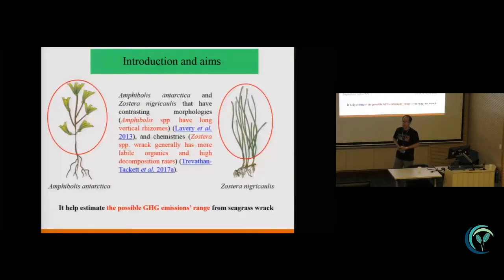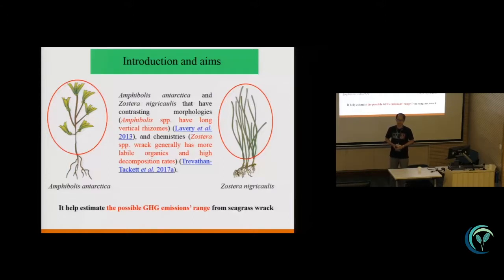As we know, there are about 74 seagrass species in the world, and the seagrass show morphological species differences and also composition differences. So for example, for Amphibolis antarctica, it has a long vertical stem, but for Zostera nigricaulis, it just has smaller leaves.